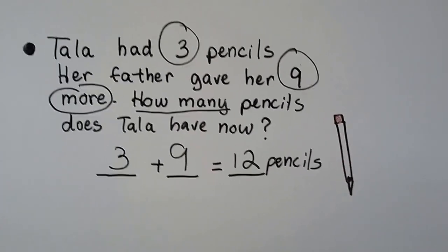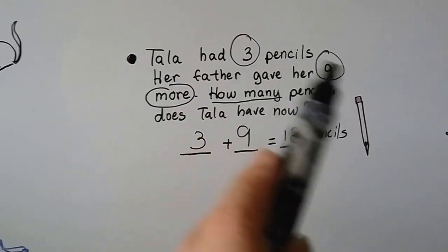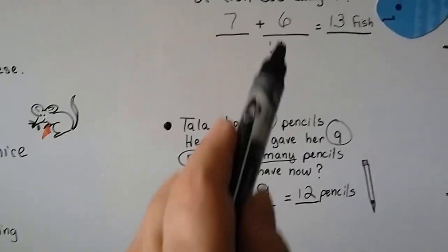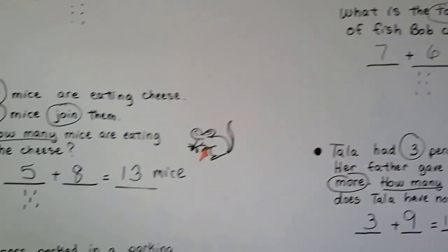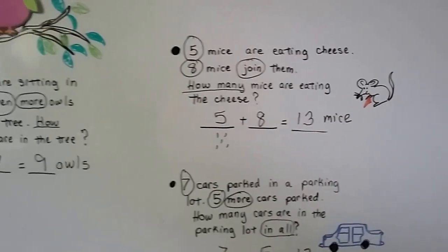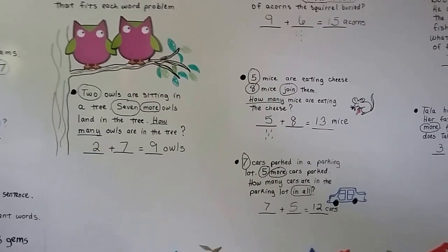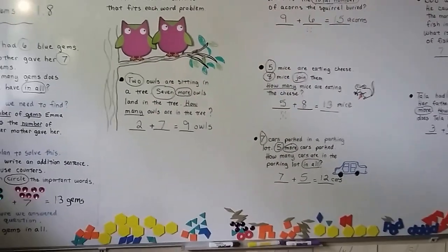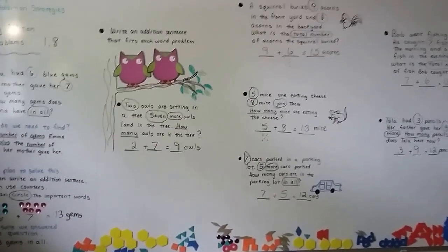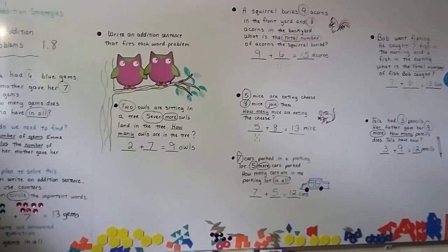When you're doing word problems and writing addition sentences, try circling the important information and looking for clue words like 'more,' 'total number,' 'join,' and 'in all' — that'll help you know if it's an addition sentence. Remember to label your answers. You can use counters, but most importantly, try circling those important words. I'll see you next video. Keep trying. Bye.